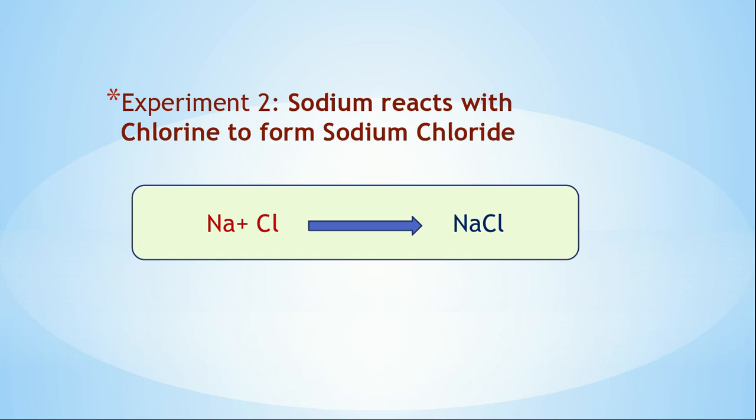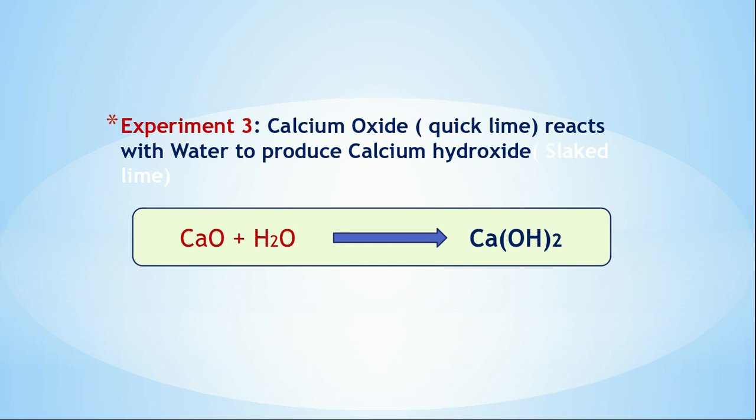Now let us see another example: sodium reacts with chlorine to form sodium chloride. The symbol of sodium is Na and chlorine is Cl, where sodium reacts with chlorine to form sodium chloride, that is NaCl.